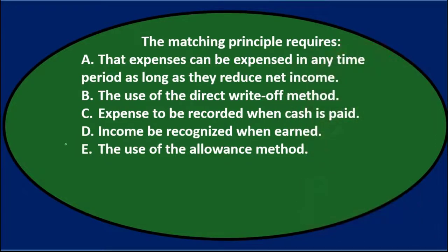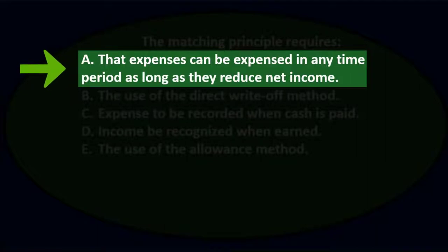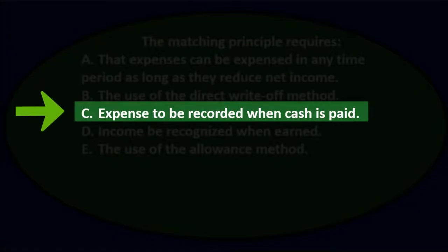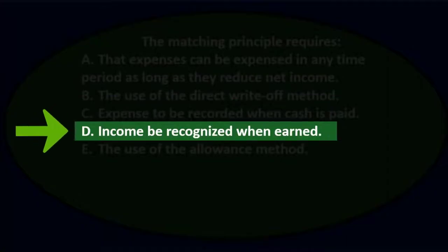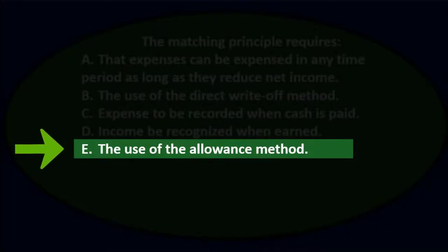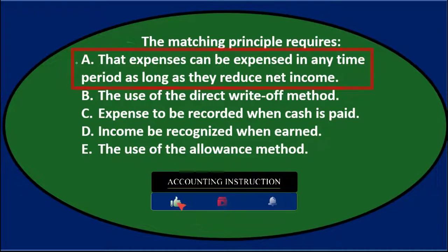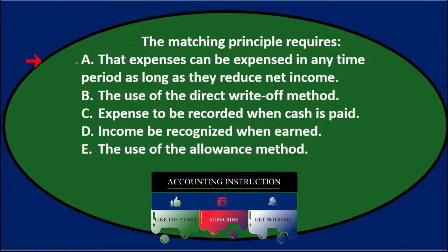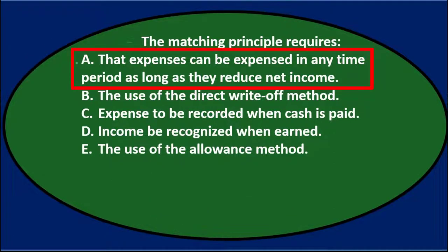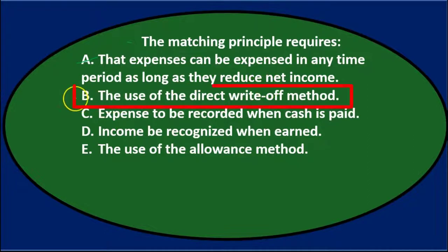Next question. The matching principle requires: a) that expenses be expensed in any time period as long as they reduce net income, b) the use of the direct write-off method, c) expense to be recorded when cash is paid, d) income be recognized when earned, or e) the use of the allowance method. Option A doesn't make sense — we can't just expense anything in any time period we want, even though expenses always decrease net income. Option B, the direct write-off method, is the unpreferred method, so a principle is unlikely to require it.